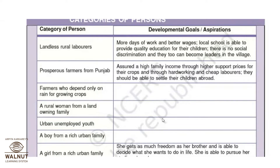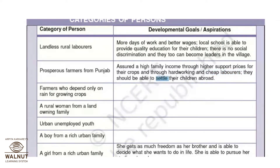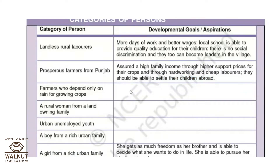Development is different for different people. For landless rural laborers, the goal is more days of work and better wages. For a prosperous farmer from Punjab, it is higher crop prices, cheap labor, and the ability to send their children abroad to study. For a farmer who depends only on rain, the goal would be access to irrigation — if he gets irrigation, that is development for him.